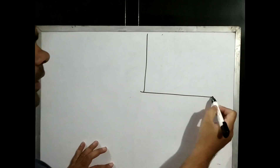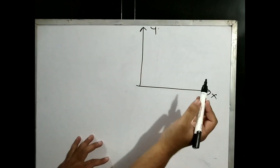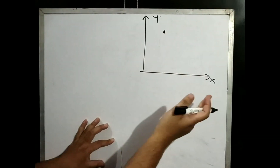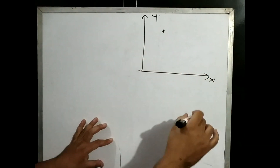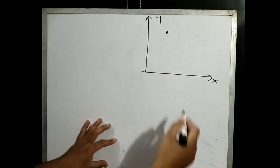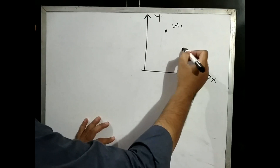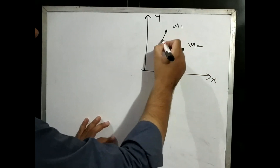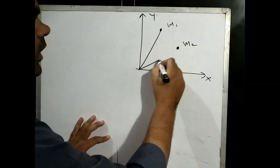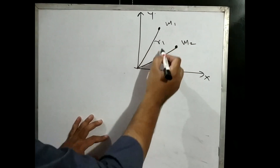Toh hum figure ke according formula dekhenge. Yaha par maine x aur y axis, dono axis bana di hai. Yaha par hum particles show kar rahe hai. Suppose that there are so many particles, jinke masses m1, m2, m3, m4 hooga. But simplicity ke liye mein yaha par sirf dho hi particle le raha hoon. Yeh m1 aur m2 dho particles hai, jinke masses m1, m2 hai, aur inki position vectors, yani origin se inki distance r1 aur r2 hai.